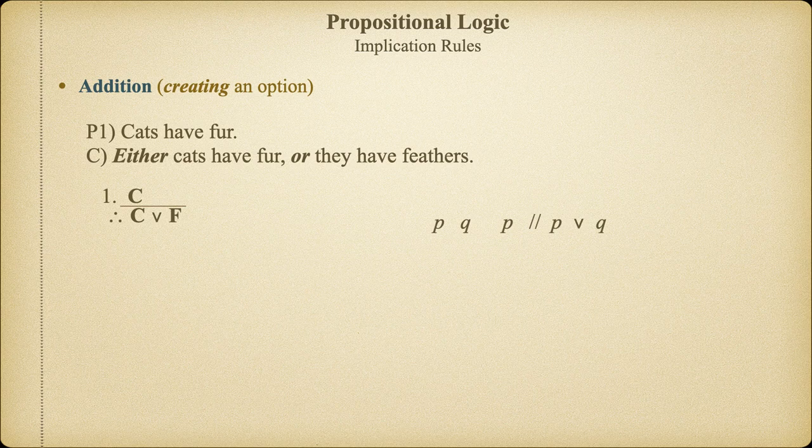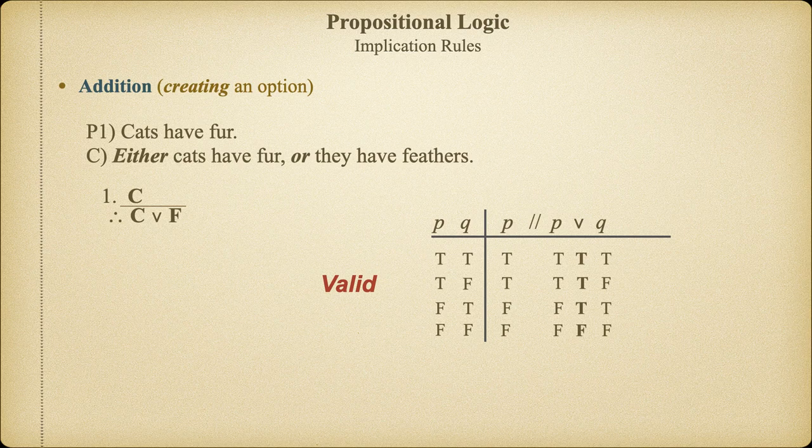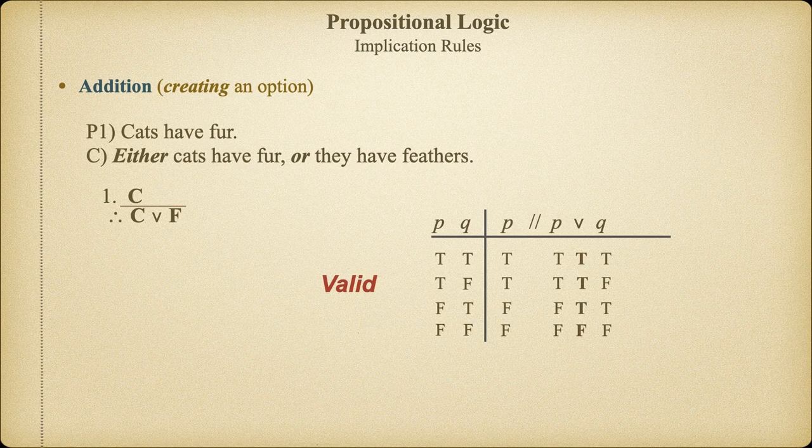We can quickly prove the validity of this simple argument with the truth table. When the truth table is done, we can see that there are no cases where the premise is true and the conclusion false, and it is therefore valid. The rule of addition is going to be quite handy when demonstrating the validity of ordinary language arguments, as you'll see in the exercises you'll be doing.